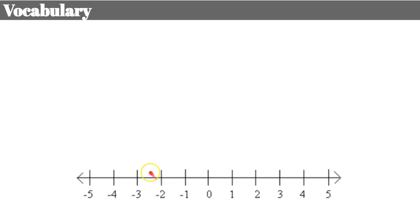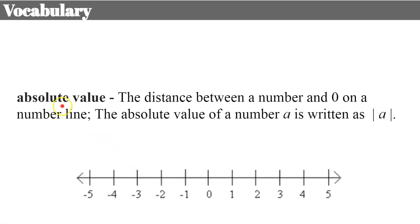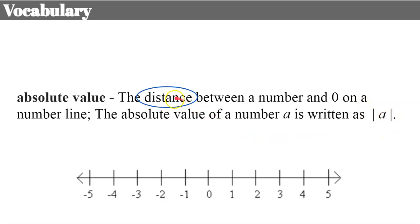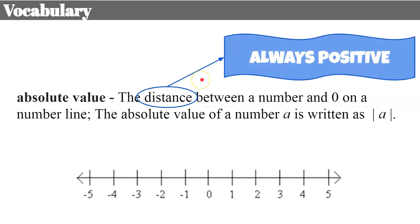Let's begin by going over a few vocabulary terms. What is absolute value? Now that you're in Algebra 1, you should have learned about absolute value, but let's review it to refresh our memories. Absolute value is the distance between a number and zero on a number line. The absolute value of a number A is written as |A|. These parallel lines are the symbol for absolute value. Distance is always positive — you never say you're negative miles away from somewhere.